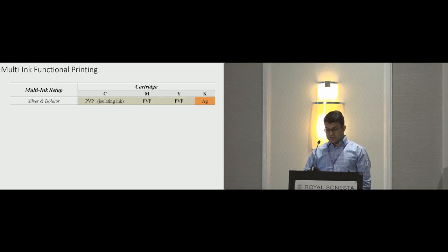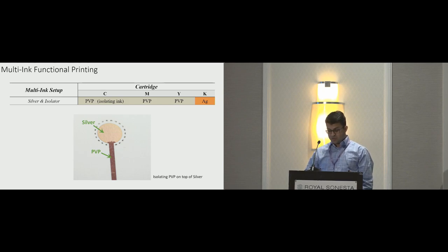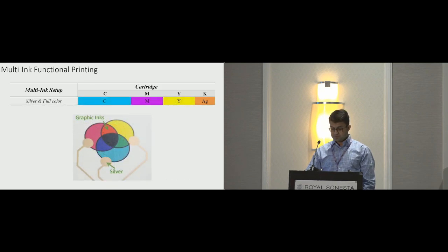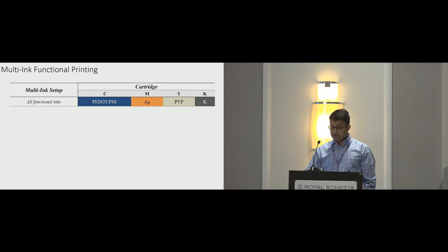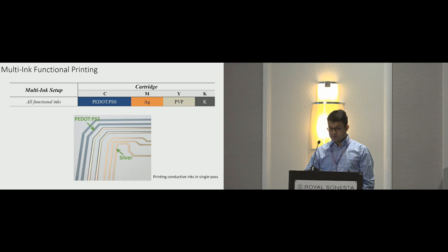And so we did combine our selected functional inks into a single printer. For instance, in this setup, we put isolating PVP ink into color cartridges and silver into the black cartridge of the printer. We then printed isolating PVP ink on top of silver to have exposed electrodes and isolated circuitry. Similarly, we can even combine conductive inks with graphic inks to print circuits with an art layer in a single pass. We can even combine all functional inks in a single printer. This gives us the largest flexibility for combining functional inks. For instance, here we printed silver with PEDOT:PSS in a single pass to have circuits that combine the complementary benefits of silver-based and polymeric conductors.